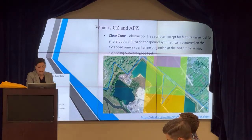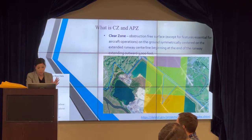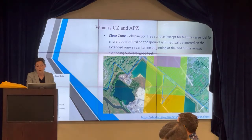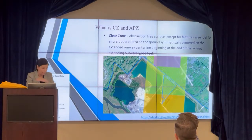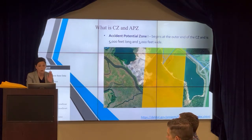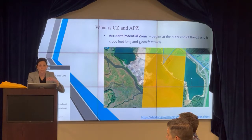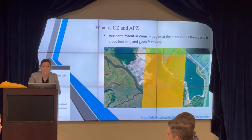We have to maintain our restrictions within the clear zone. Just to remind you, the clear zone is obstruction-free and it's in that entire green area. The accident potential zone is in the orange area, and that is also on your map, so you can see the green and the orange.